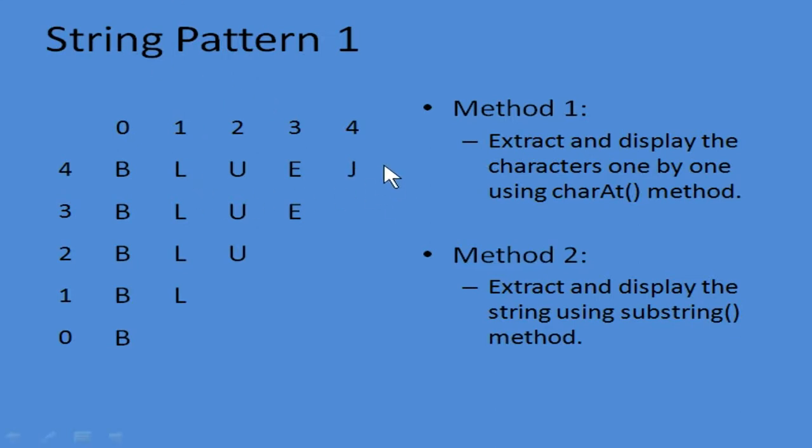How do you solve this? You have two methods. The first method is the same as your number pattern — you use two nested loops. You need to know the i value, its start and end value, and whether it is increasing or decreasing. Then you need to know the j value — whether it is increasing or decreasing and its start and end value. Inside the loop you use System.out.println, but instead of displaying j directly, you use the charAt() method to extract the character at that index position.